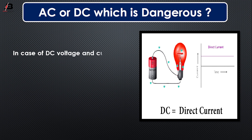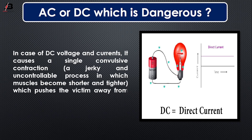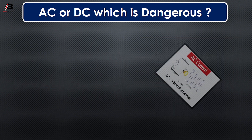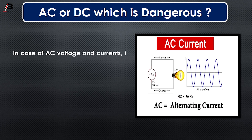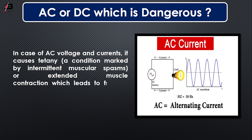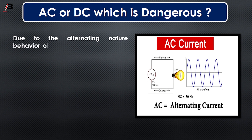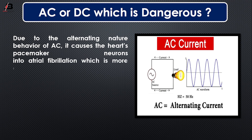In the case of DC voltage and current, it causes a single convulsive contraction — an uncontrolled process in which muscles become shortened and tighter — which pushes the victim away from the DC source. In the case of AC voltage and current, it causes intermittent muscular spasms or extended muscle contraction, which leads to freezing the victim to the parts of the body touching the AC source. Due to the alternating nature of AC, it drives the heart's pacemaker neurons into ventricular fibrillation, which is more dangerous than DC.